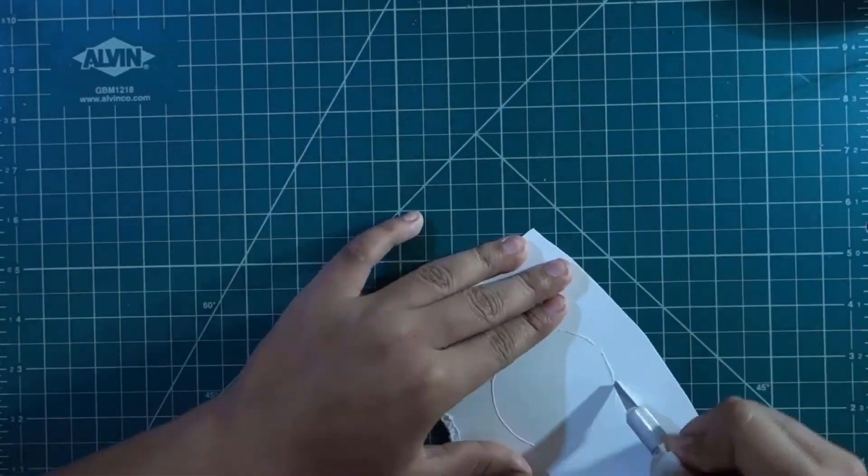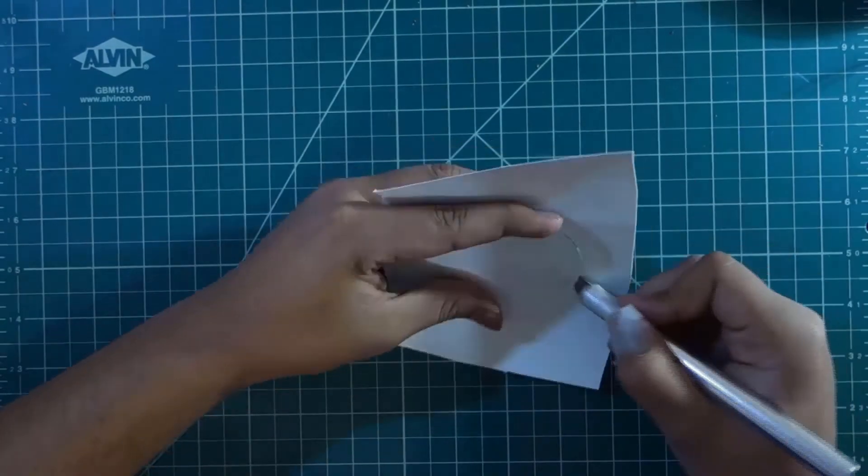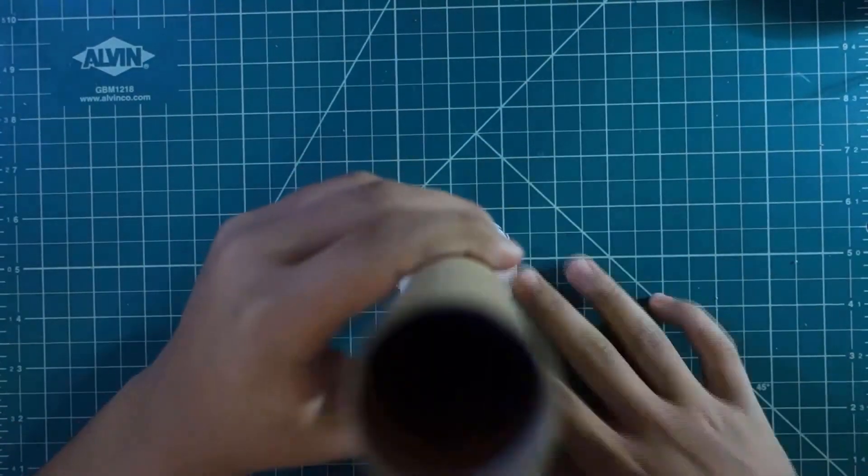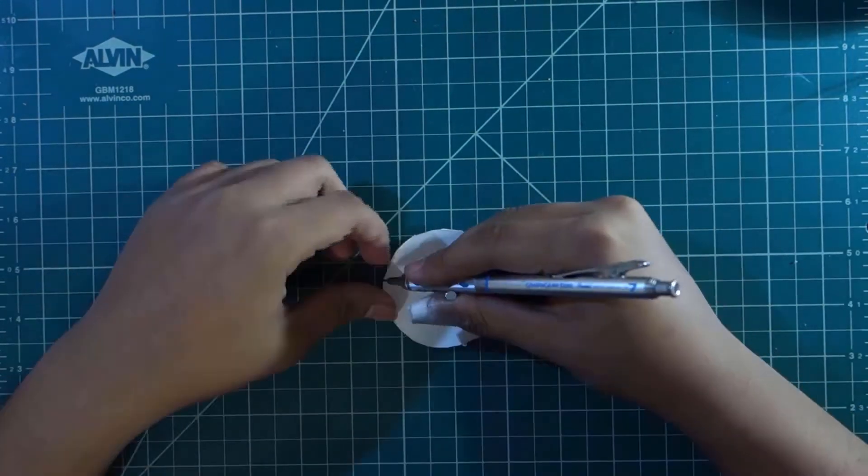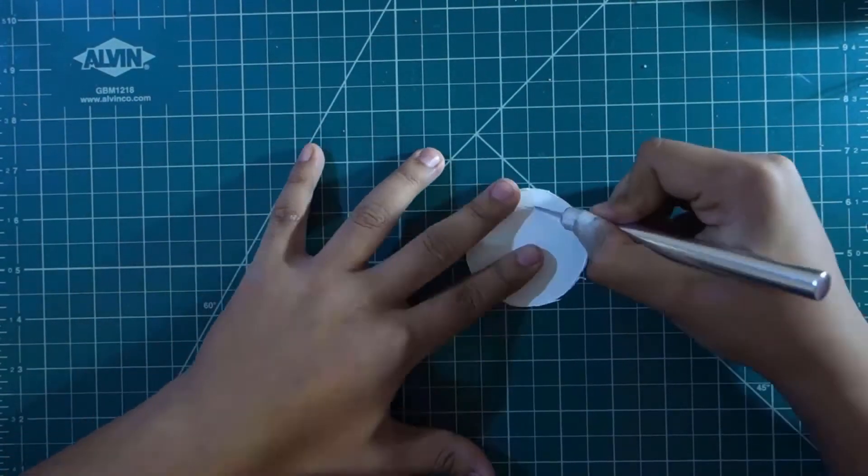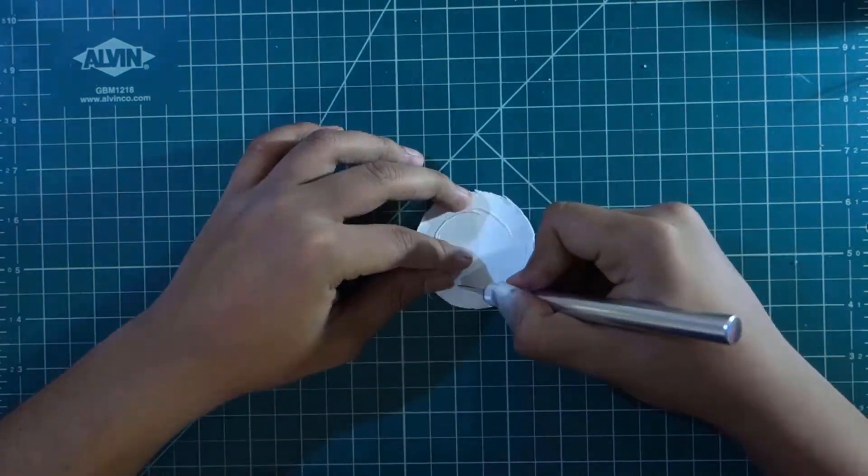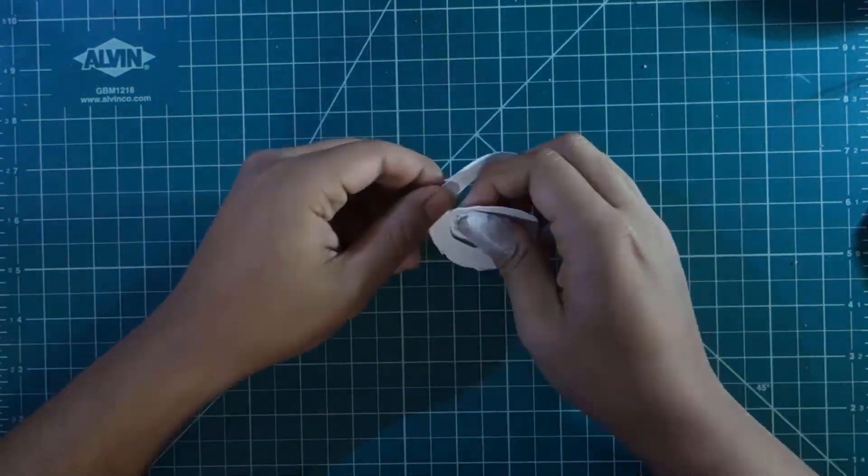Now take a paper cup and cut a circle out of it. Now mark another circle inside it that's bigger than the diameter of the toilet tissue paper tube. And then cut it out using a Xacto knife.